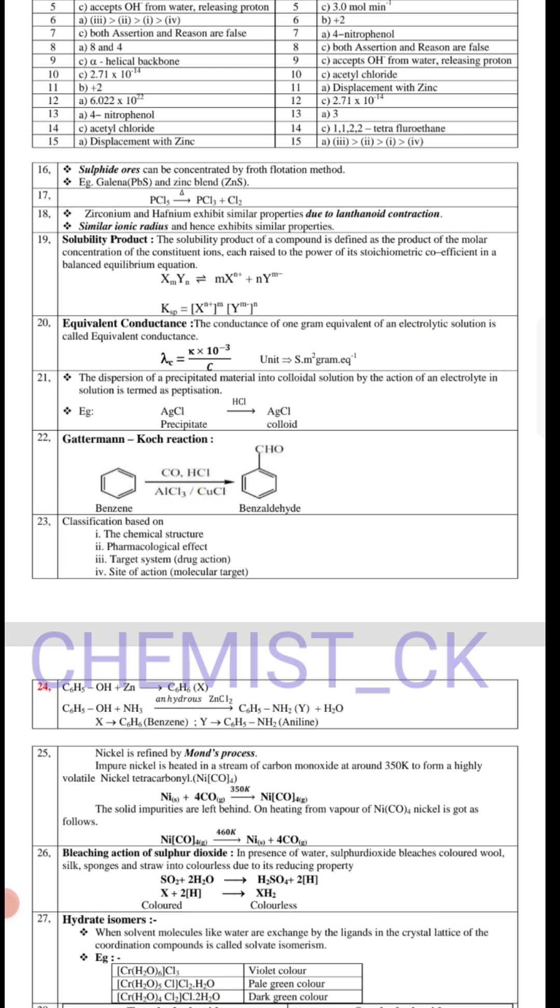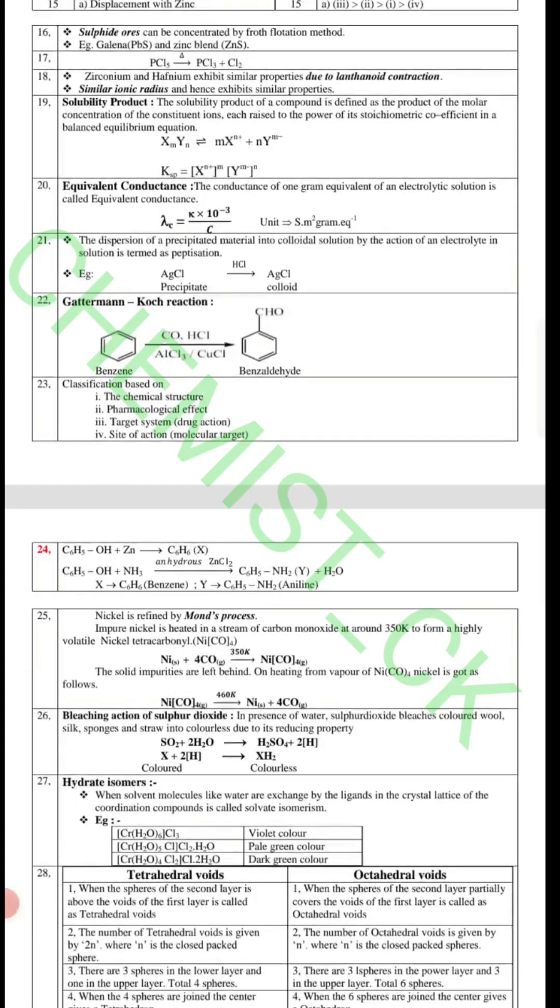18th question, why do zirconium and hafnium exhibit similar properties? The answer is same 5d electrons, 1.4 and 1.5. 19th question, define solubility. 20th question is equivalent conductance. If you get unit 9, the page is 37. Right, cationic charge exchange, it is 1.52 volume.